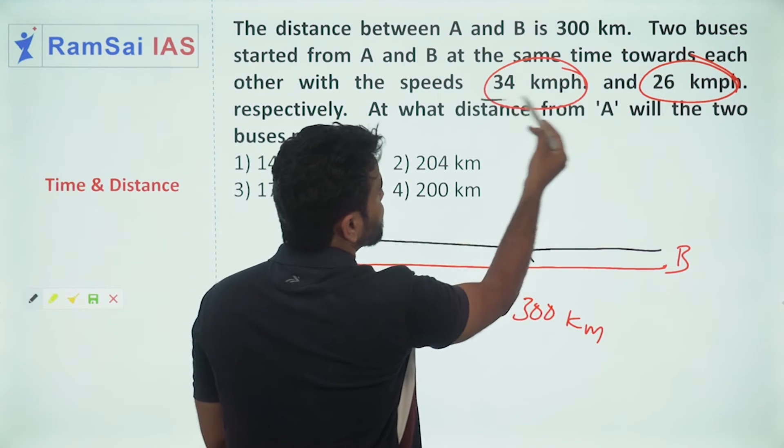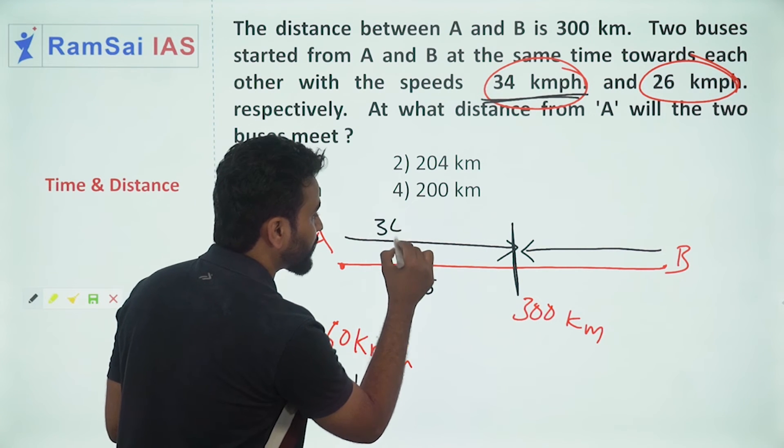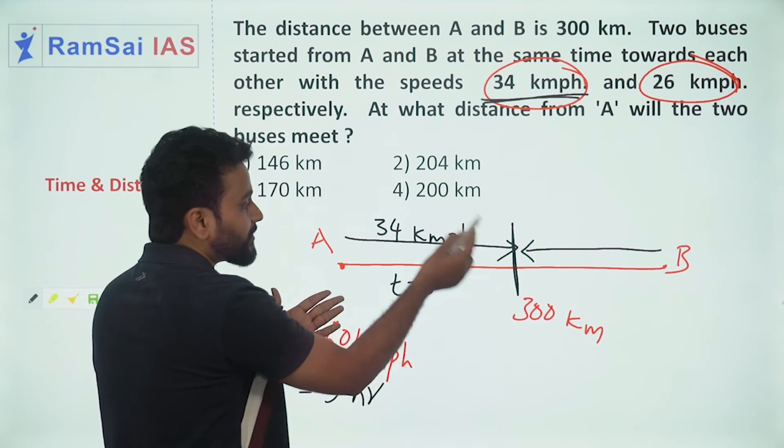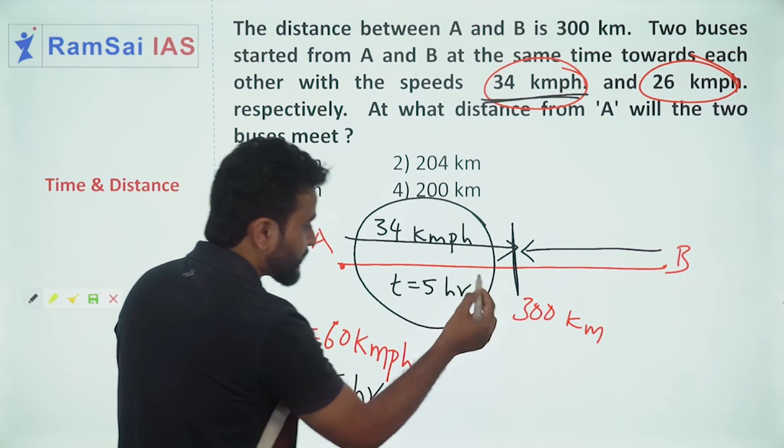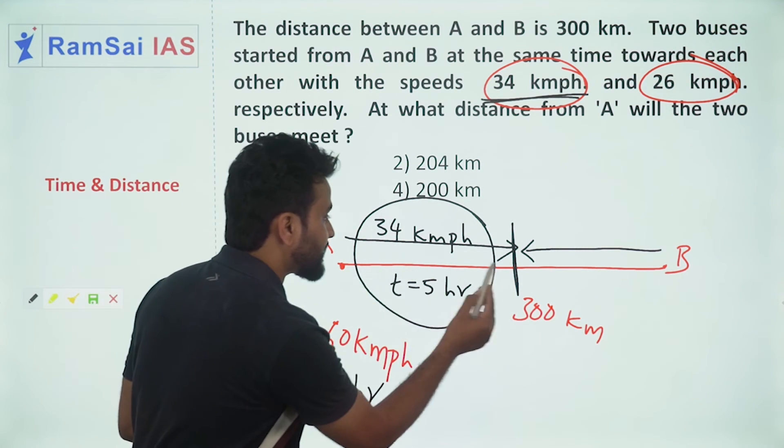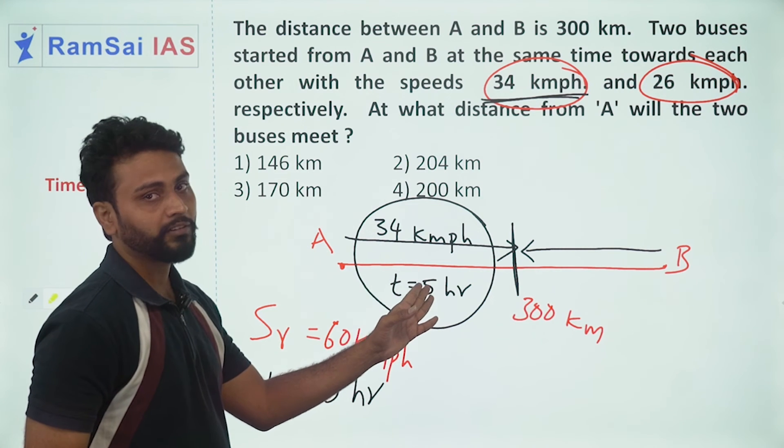The first bus is traveling at a speed of 34 kilometers per hour. By the time they meet each other they took five hours. So in that five hours with a speed of 34 kilometers per hour, how much distance did the first bus travel? Speed and time we have, distance equals speed into time.